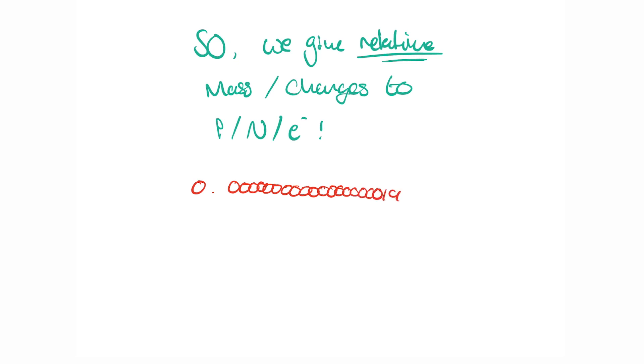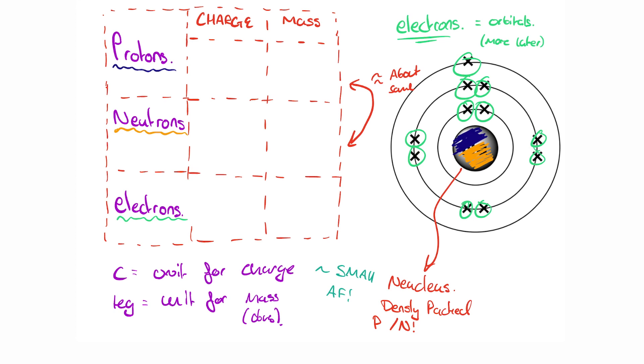Therefore, we give protons, neutrons and electrons relative masses and charges. We say that zero point and then zeros onwards to 167 kilograms has a relative mass unit of one. And we say the charge, naught point 18 zeros, one nine coulombs is a relative charge of one.